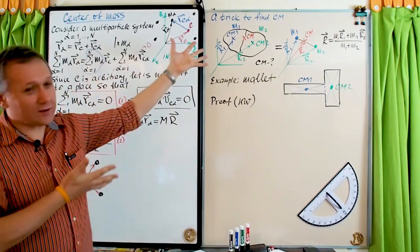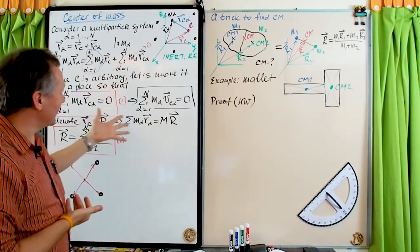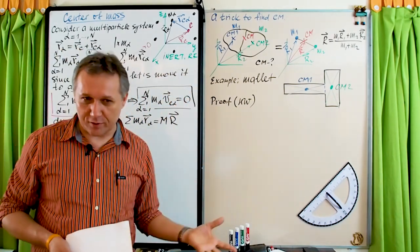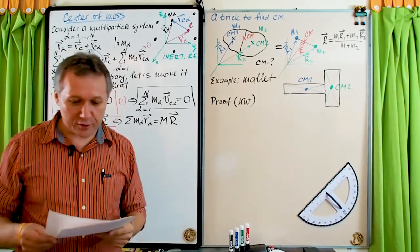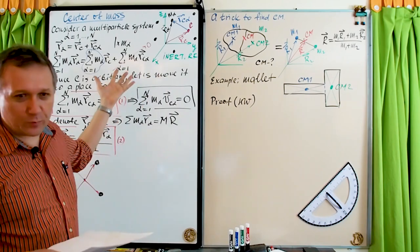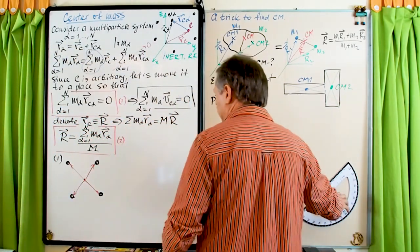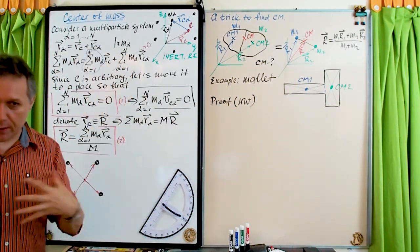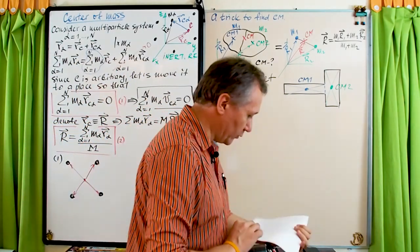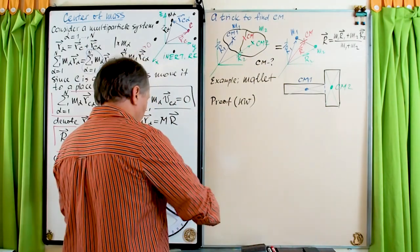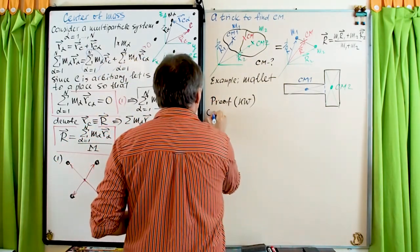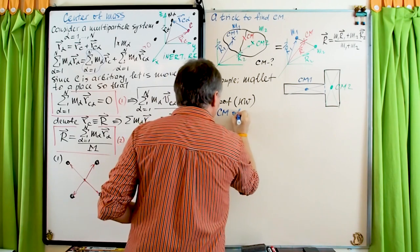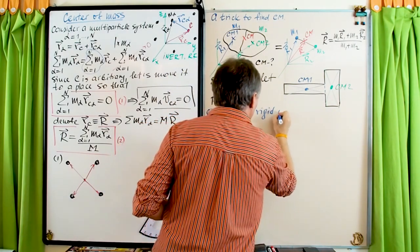We still don't see the beauty of the center of mass — we've just introduced a trick to find it. Now let's look at the rigid object. How can we find the center of mass of a rigid object? A rigid object is just a multi-particle system with rigid connections between particles. Center of Mass of a Rigid Object.